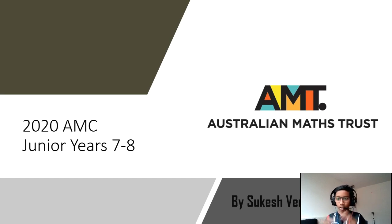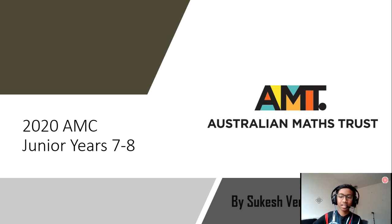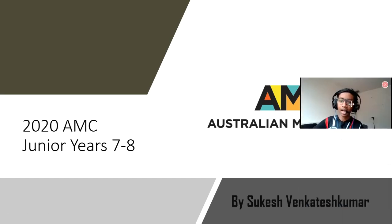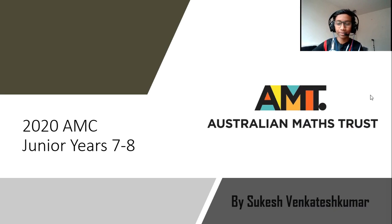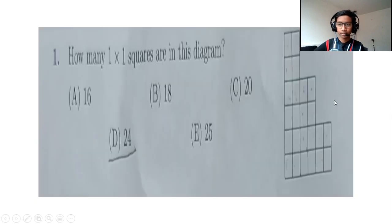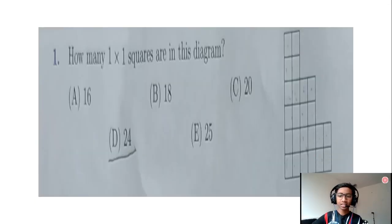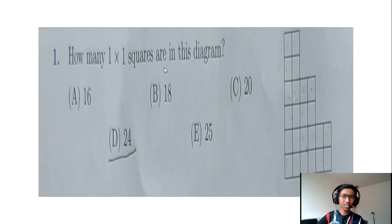Three was the right one and let's go through the answers and how we could have improved. This is the front cover, guys. Now the first question is asking us how many one-by-one squares are in this diagram. We get five options.